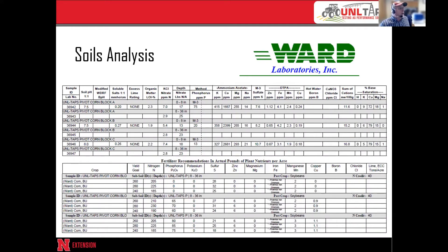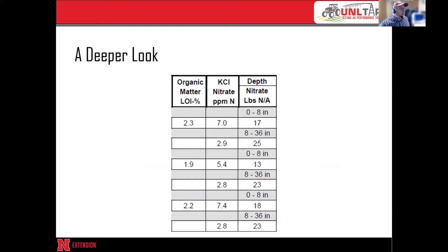Here is the soils analysis from Ward Labs. We took surface samples at zero to eight inches and deep samples at eight to 36 inches. Organic matter ranged from 1.9 to 2.3 percent. In the top layer we had 17, 13, and 18 pounds of nitrogen — about 16 or 17 pounds. The bottom layer ranged from 23 to 25, so about 23 or 24 pounds of nitrogen residual in the eight to 36 inch sample.